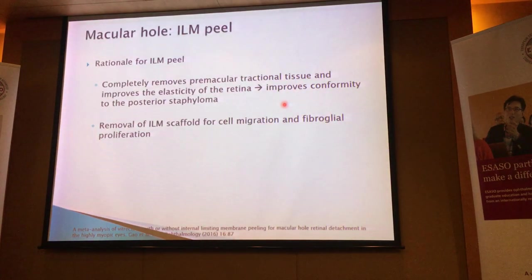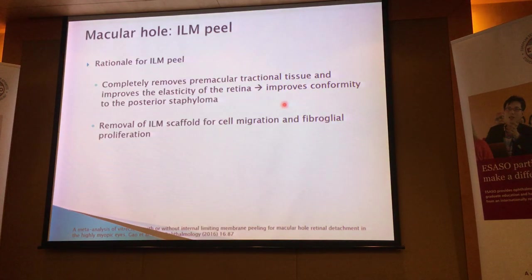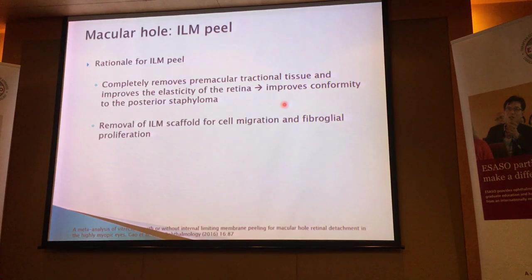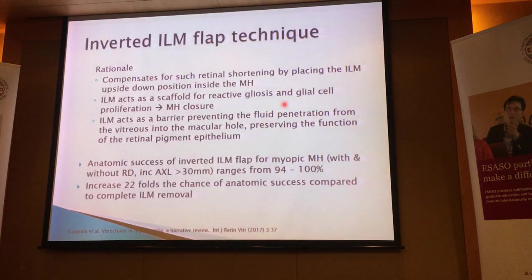What is the rationale of ILM peeling in these eyes? Basically, what is believed to happen with ILM peeling is that you completely remove the pre-macular tractional elements — all the epiretinal membrane, the internal limiting membrane, anything causing traction on the surface of the retina. In so doing, we actually improve the elasticity of the retina. Hopefully with improved elasticity, the retina can start to conform to the contour of the posterior staphyloma. The removal of ILM as a scaffold is also another theory — this ILM is a platform for cell migration and proliferation of glial cells, and leaving it there allows the traction to worsen.